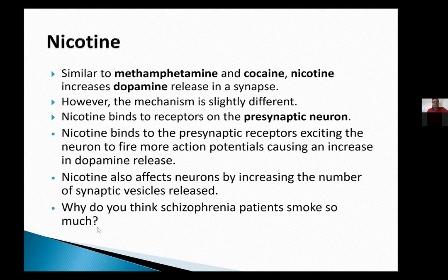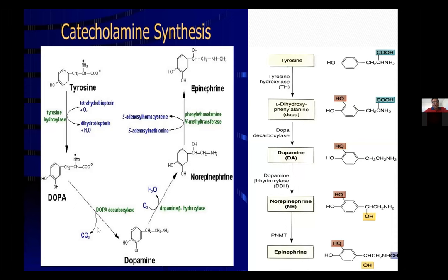Among nicotinic receptor subtypes, there are alpha-7, beta-4 alpha-2, and others. Chantix (varenicline), used to stop smoking, actually works on the beta-4 alpha-2 receptors and is a partial agonist — the most effective drug therapy for smoking cessation. Alpha-7 receptors are not viable therapeutic targets because there is rapid tolerance to drug effects, making them unhelpful.